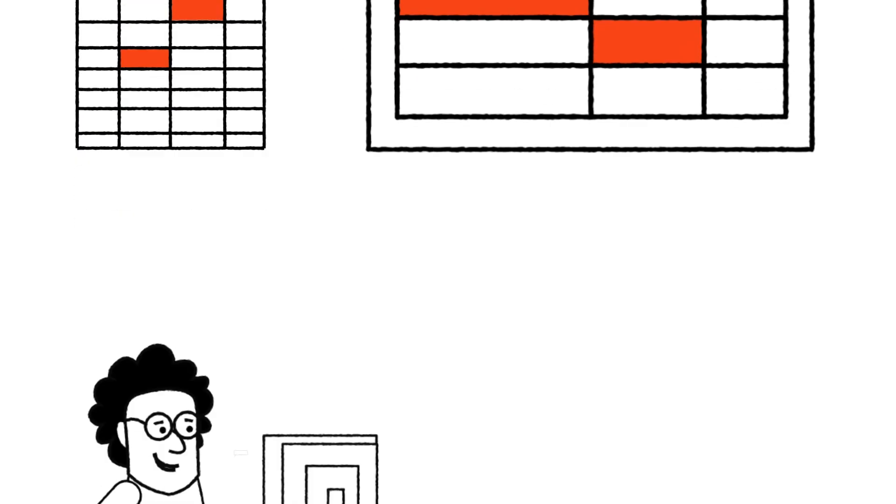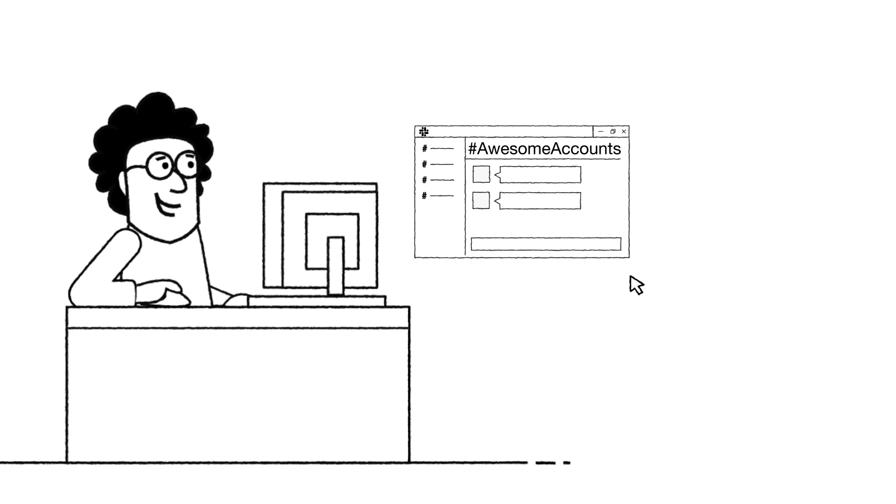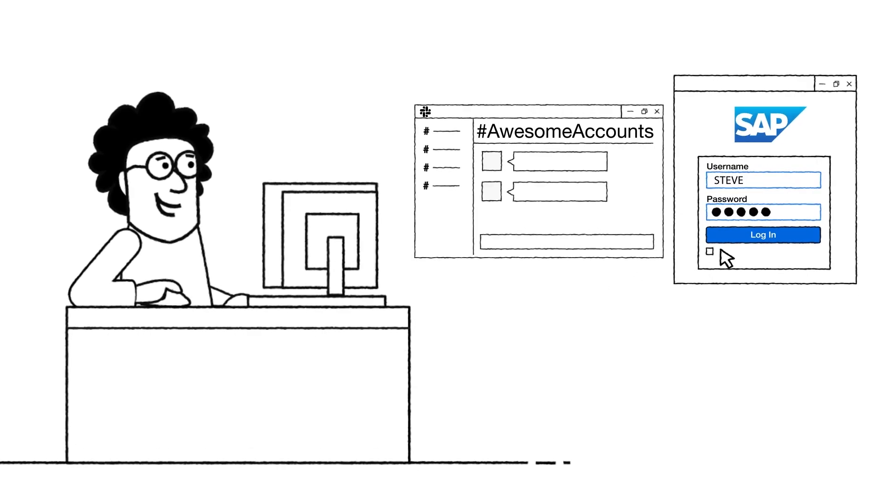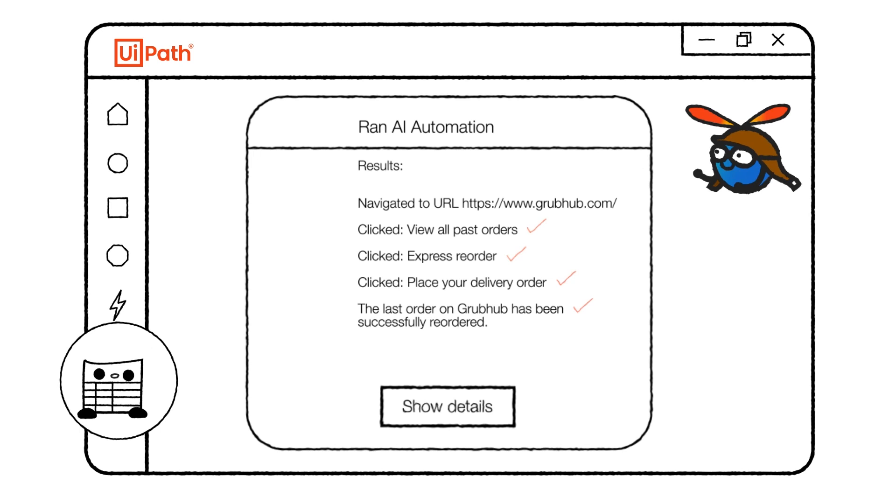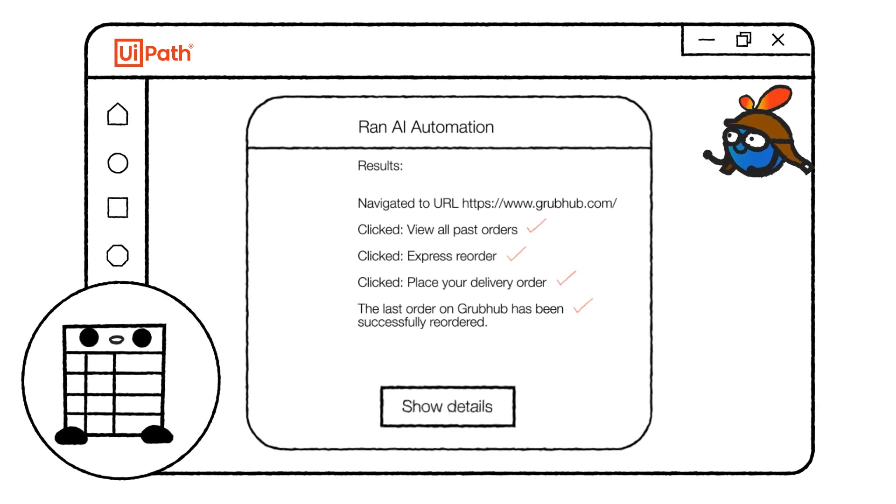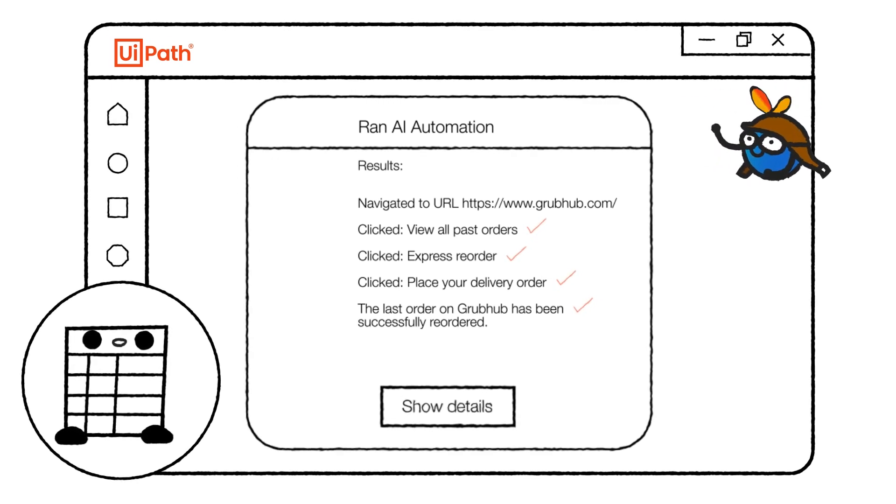Autopilot also surfaces existing automations from the COE. Or, if an automation doesn't exist, it uses AI to create a new one. Surely, even you can't deny that kind of AI-powered power.